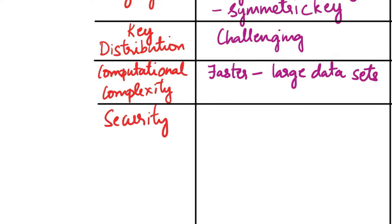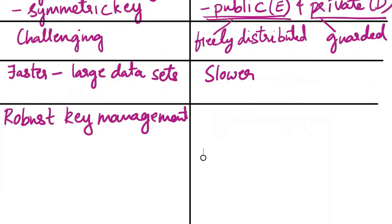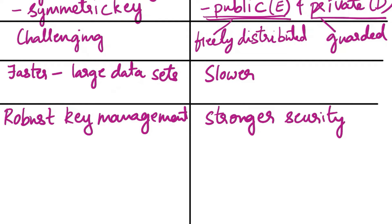The next aspect of comparison is security. Symmetric cryptography requires robust key management because a compromise of the key compromises all data — security relies heavily on key protection. Asymmetric cryptography offers stronger security as the private key is kept secret, making it resistant to unauthorized decryption even if the public key is known.